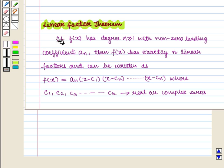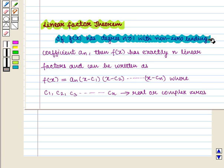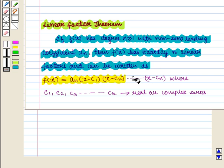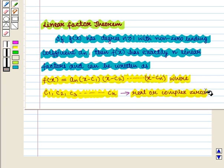We know that the Linear Factor Theorem states: if f of x has degree n greater than or equal to 1 with non-zero leading coefficient a_n, then f of x has exactly n linear factors and can be written as f of x equals a_n times (x minus c1) times (x minus c2) and so on up to (x minus cn), where c1, c2, c3 up to cn are real or complex zeros. With this key idea we shall move on to the solution.